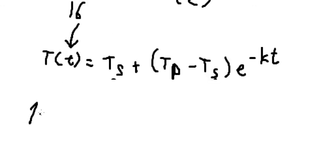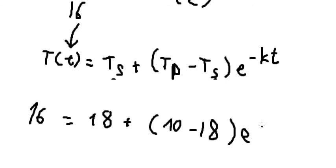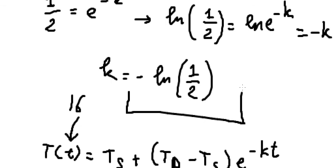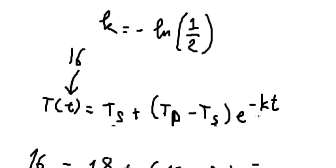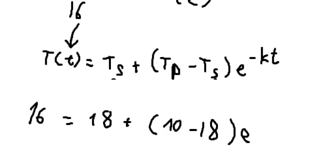Now, we change this one into 16 equals 18 plus (10 minus 18), and we have e to the power of negative K. That's about this one. Negative with negative, we have positive. That's about LN of 1 over 2, and we multiply by T.